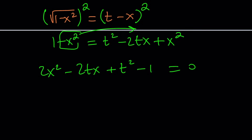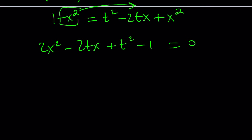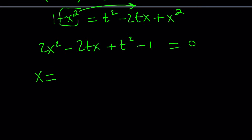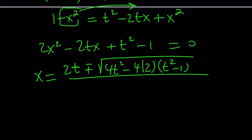Notice that this equation is quadratic in x — yes, it's quadratic in t as well, but we don't care because we're trying to solve for x. So let's use the quadratic formula, since this is not easily factorable. That gives us negative b plus or minus the square root of b squared — which is 4t squared — minus 4 times a times c, all divided by 2a, which is 4.